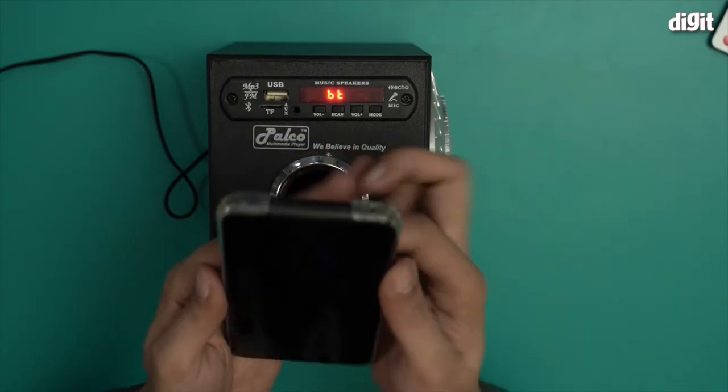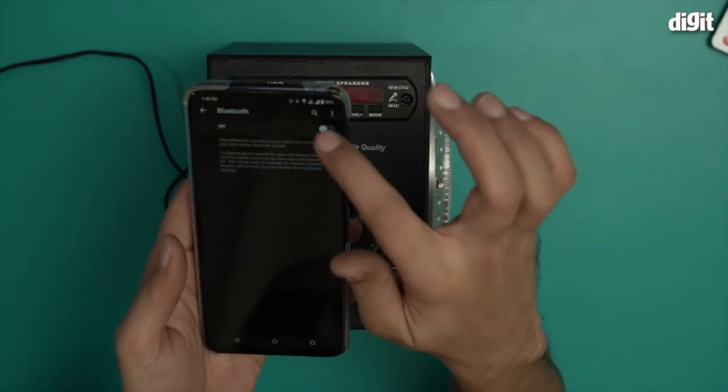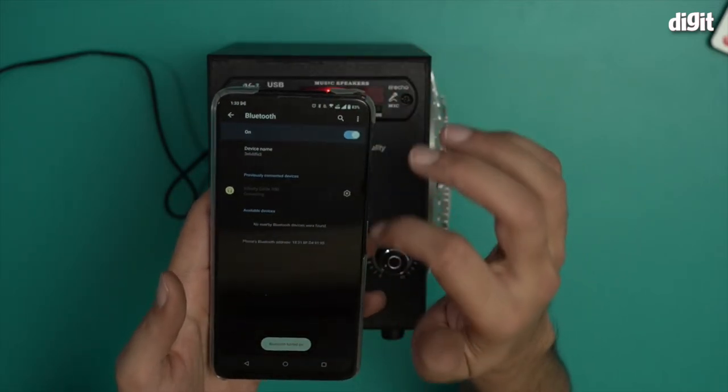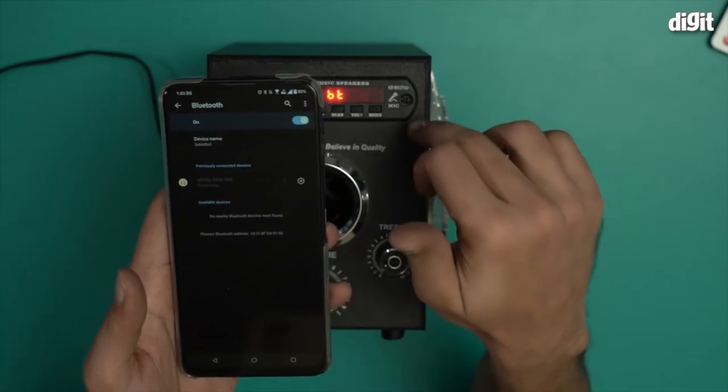Now on my smartphone, I will access the Bluetooth settings page and turn on Bluetooth like so. Now I look for a new device and connect it. Hopefully it'll be this one.